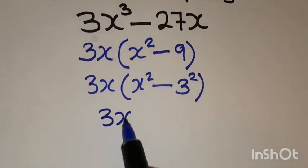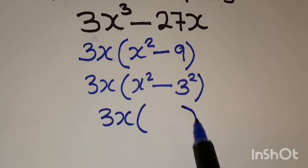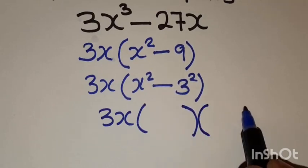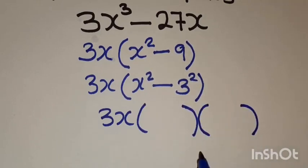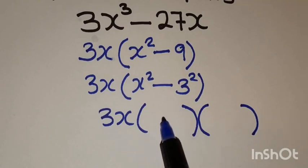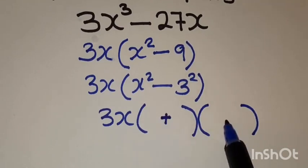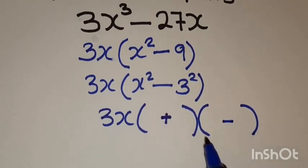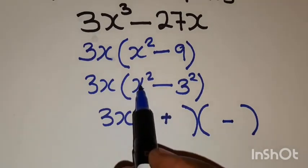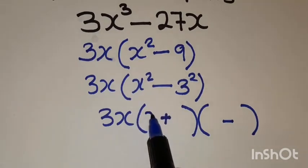So we will have 3x, then we'll open brackets like this, because this is a difference of two squares. Then we'll have a plus in here and a minus in there. The square root of x squared is x. You also write it here.